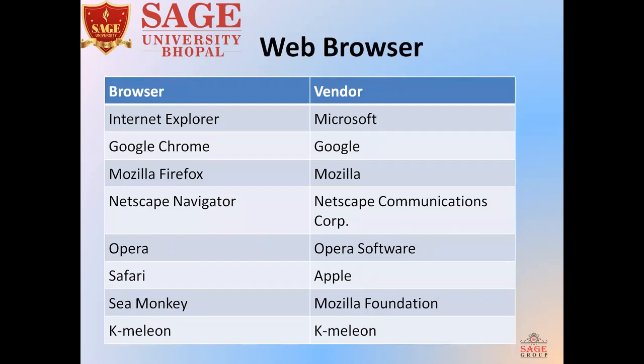For example, web browsers are Internet Explorer, Google Chrome — which is used by more than 80% of users in the world — Mozilla Firefox, Netscape Navigator, Opera, Safari, Konqueror, and K-Meleon. These are some of the web browsers used by various users.